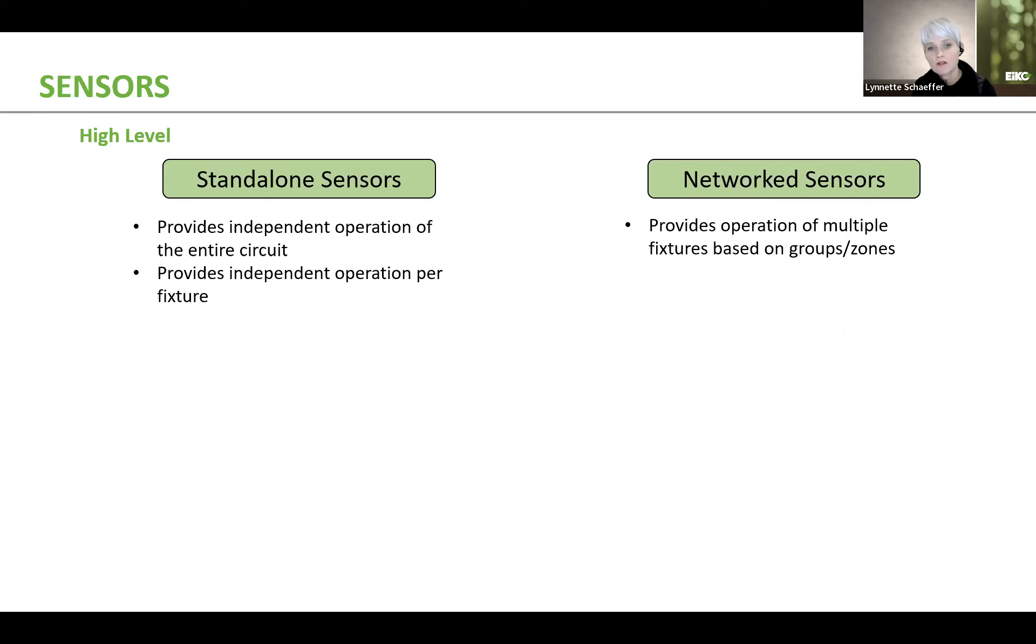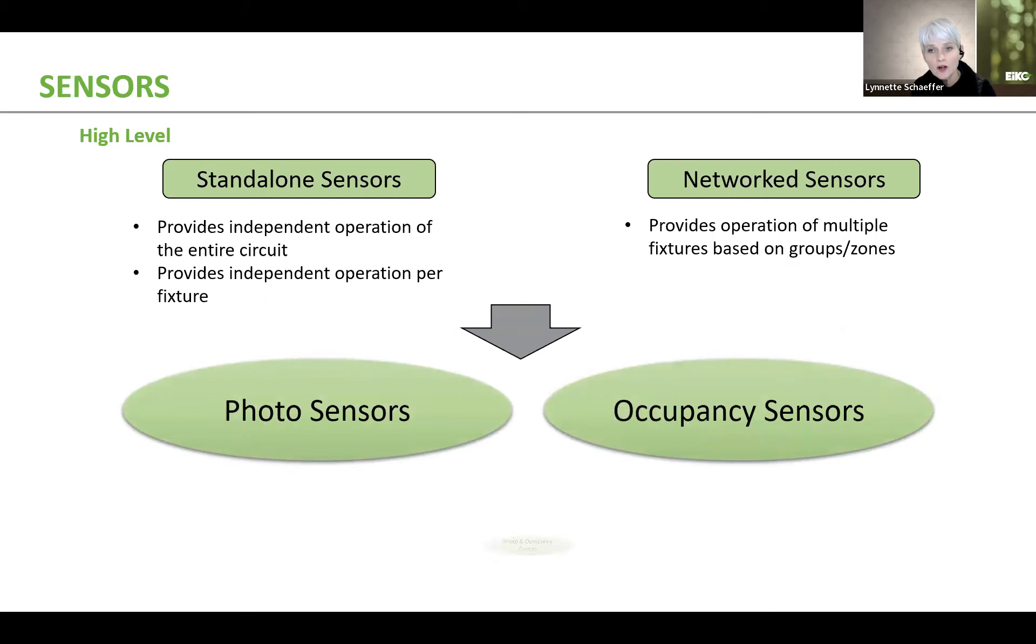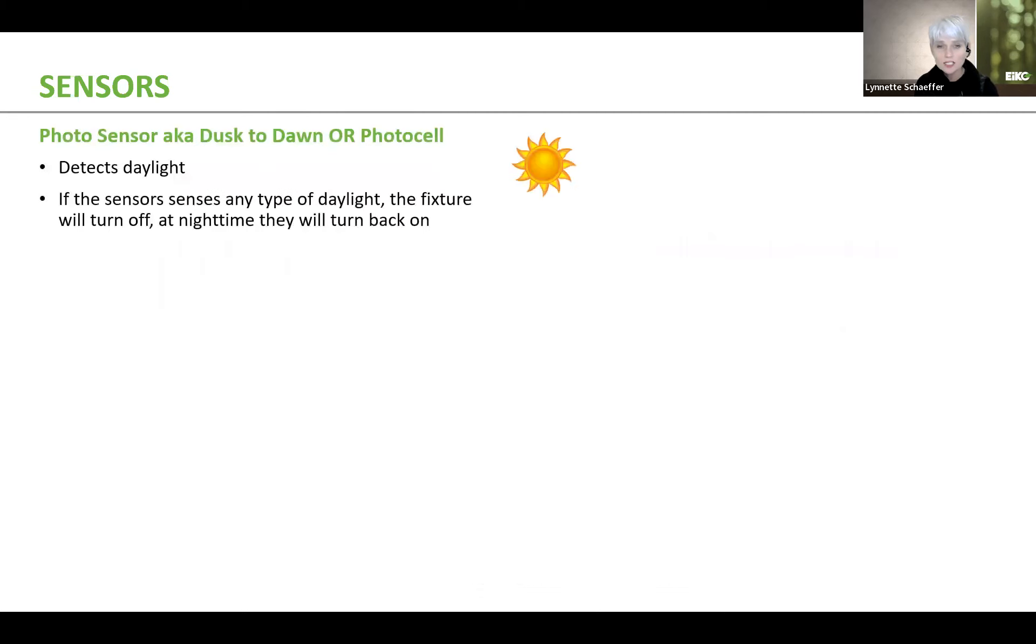When it comes to sensors, there are photo sensors, there are occupancy sensors, and there are also sensors that combine both photo and occupancy sensor as one specific unit. So let's start with photo sensors first. Photo sensors, generally speaking, detect daylight. They can also be known as more like a dusk to dawn or a photo cell. The way they work is that if there's daylight out, then the fixture won't turn on. If there is no daylight or limited daylight, then they'll turn the fixtures on. And that's basically the whole principle behind a photo sensor.